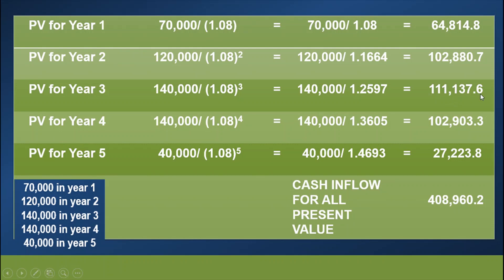And then for year 4, there will be 140,000. So 140,000 divided by 1.08 raised to the power of 4. We are going to simplify this term before we divide. When we compute 1.08 raised to the power of 4, it will give us 1.3605. And we divide 140,000 by 1.3605. It will give us 102,903.3.